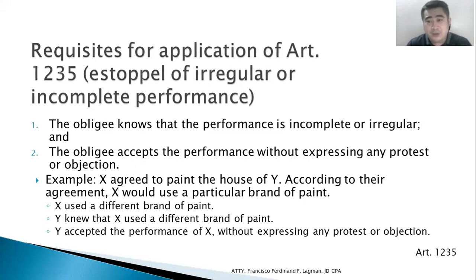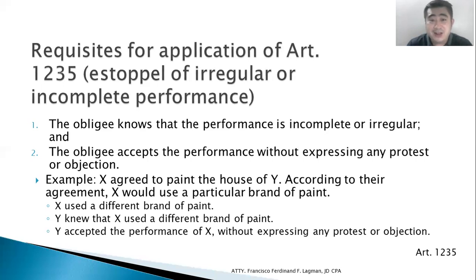Why do we have the principle of estoppel? It's necessary. Because without it, someone could accept wrong goods and use them for a long time, then only raise a complaint when they feel like it — that's not right. At the earliest instance that you know the performance is irregular or incomplete, you have to object. Object means you have to complain — magreklamo ka.